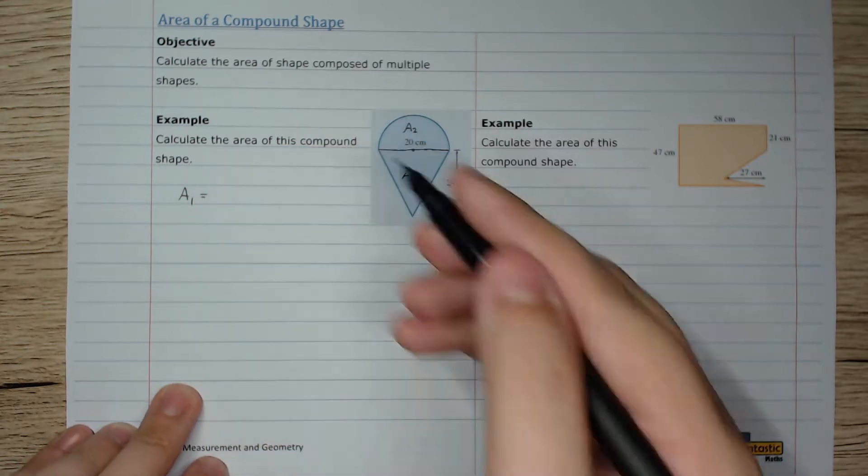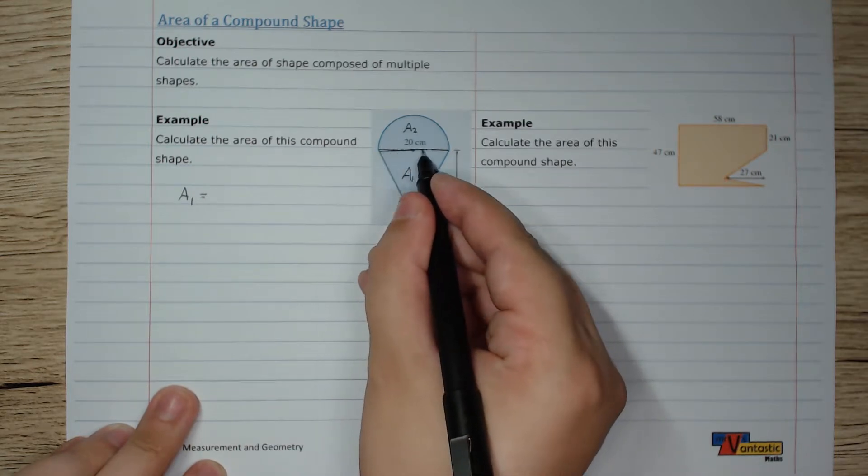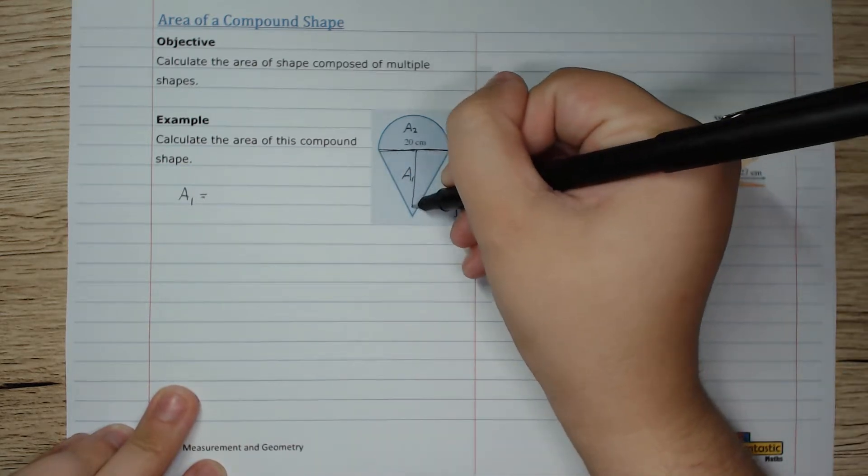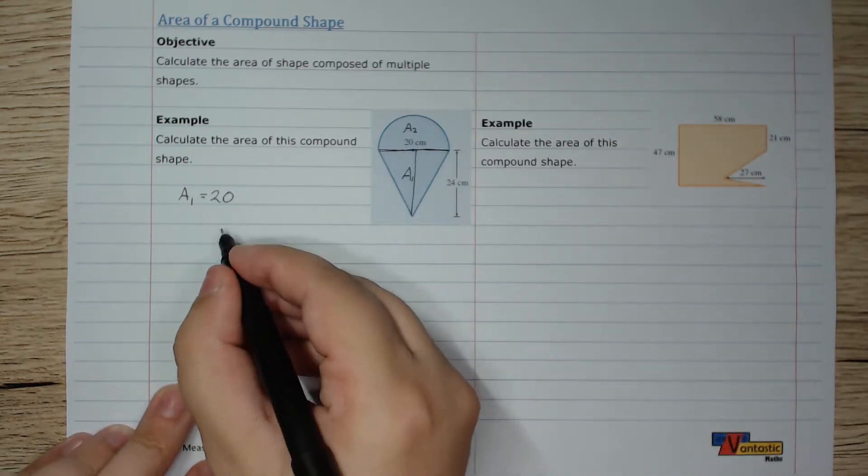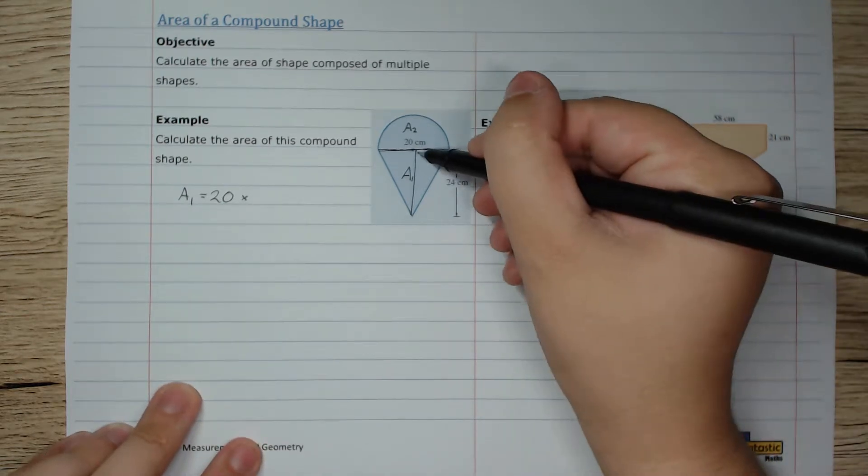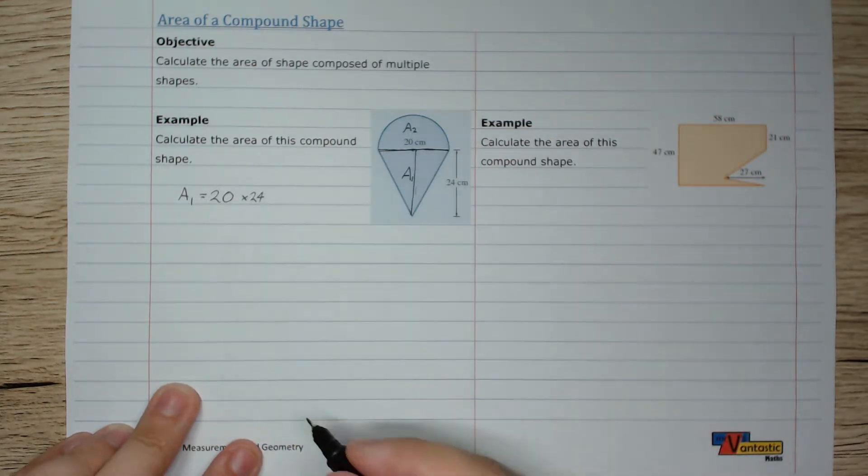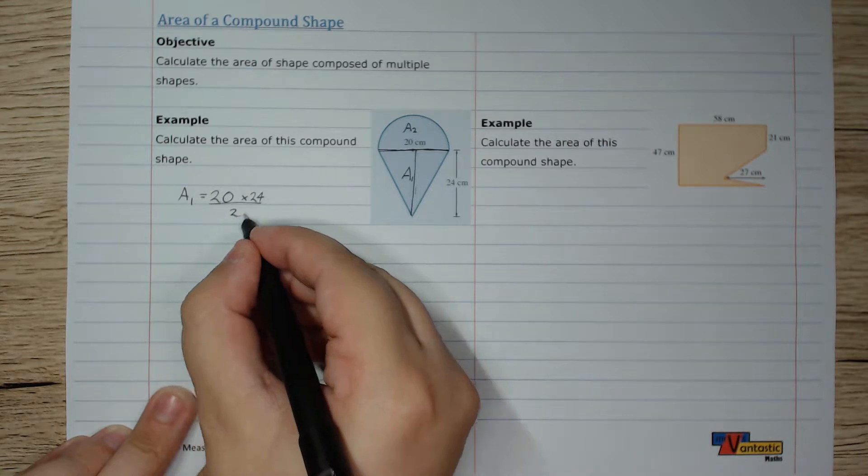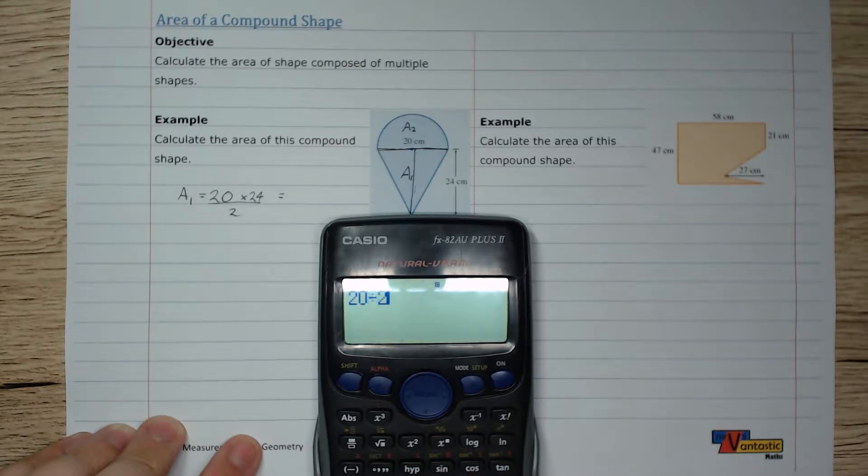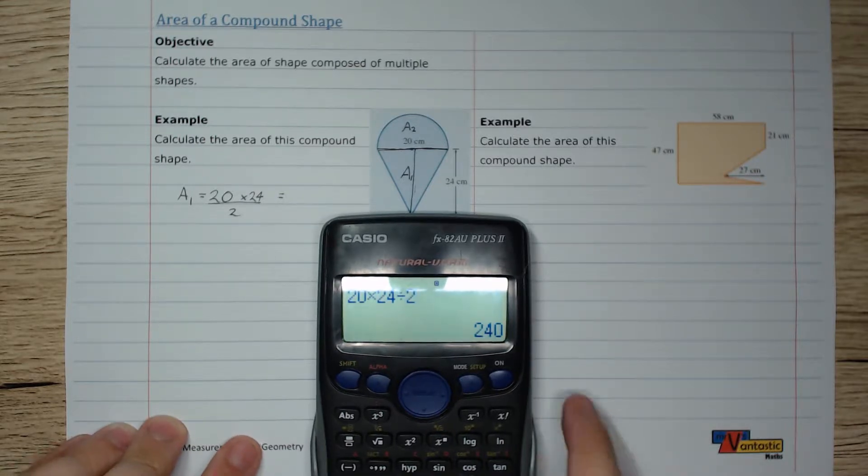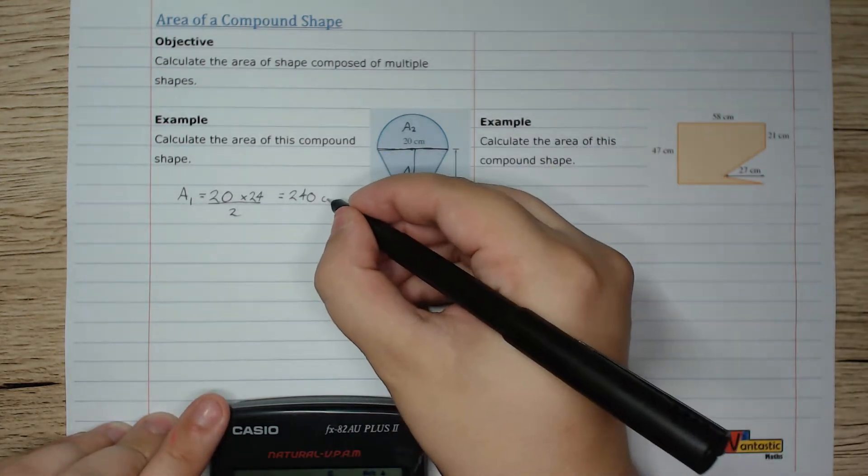So area one is obviously a triangle, and if we use this as the base, we can use that as the height. So 20 centimeters is going to be my base times 24 is my height, and of course I've got to divide that by 2 because it's a triangle. 20 times 24 divided by 2 equals 240, and this is centimeters squared.